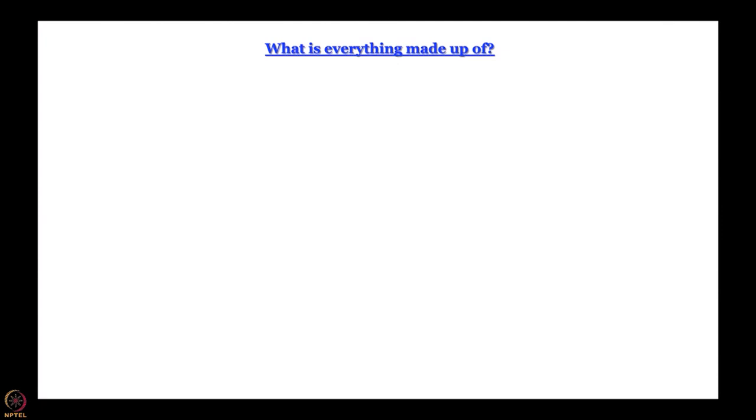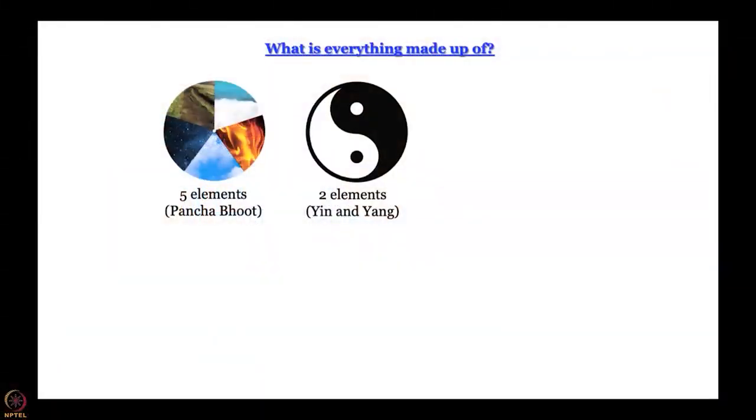The course is about addressing a question that mankind has asked over millennia, throughout civilizations. It is a question even a child asks: what is everything made up of? What am I made up of? What is this chair, table, computer — what is all this made up of? In ancient India, the answer was that everything is made up of five elements, the Panchabhutas.